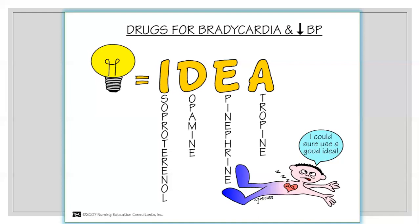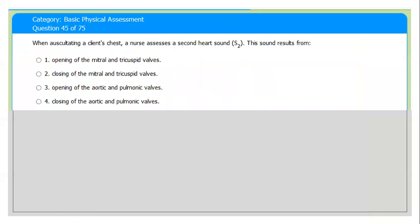I stands for isoproterenol. Isoproterenol is a synthetic derivative of adrenaline, and adrenaline is used for the relief of bronchial spasm or pulmonary emphysema. D stands for dopamine. E stands for epinephrine. A stands for atropine. Atropine can cause bradycardia, epinephrine can cause bradycardia, dopamine can cause bradycardia, or isoproterenol can cause bradycardia.